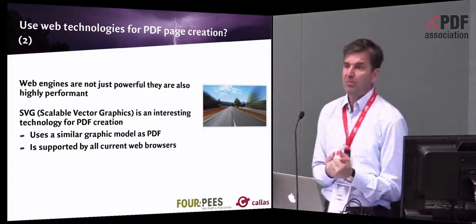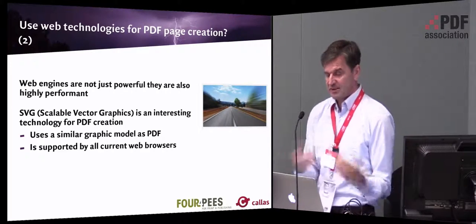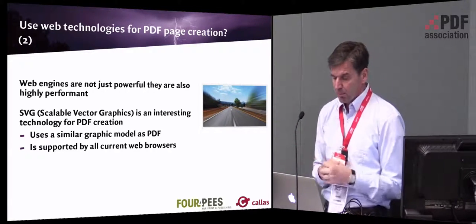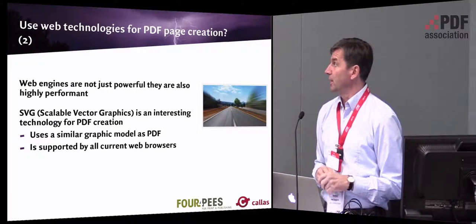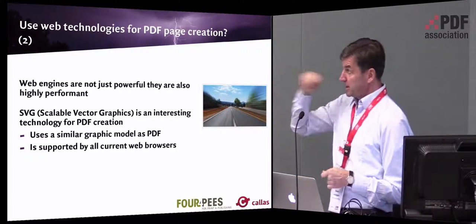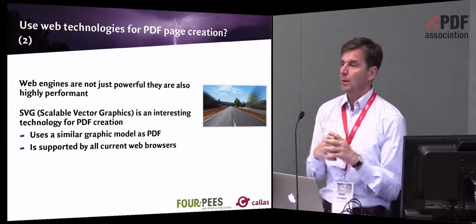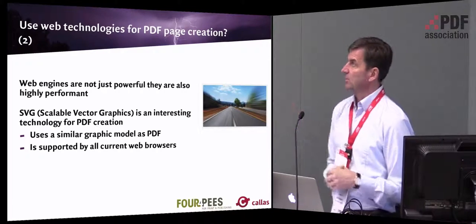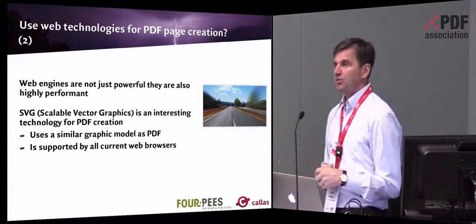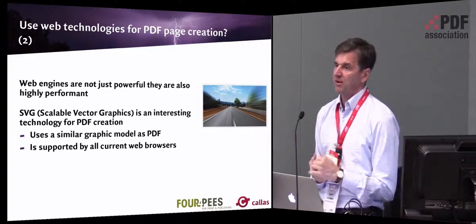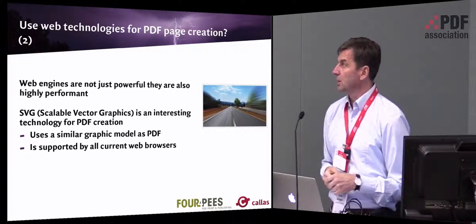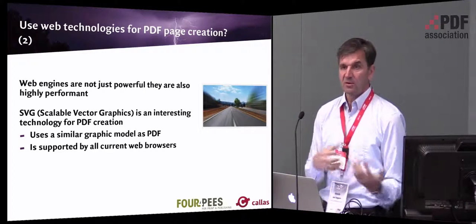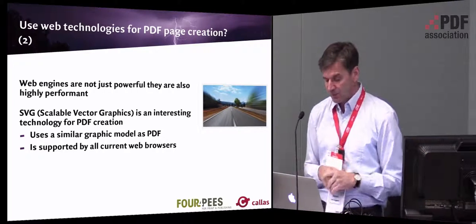Web publishing is powerful — a browser is very, very fast at translating what it receives from a web server into a painting on your screen. You have highly performant and very mature technology. And when it comes to PDF, there is also SVG — Scalable Vector Graphics — which is quite close to the internal graphic model of PDF. SVG was also invented by Adobe, so that is just another advantage: you have something quite similar to what PDF uses internally.